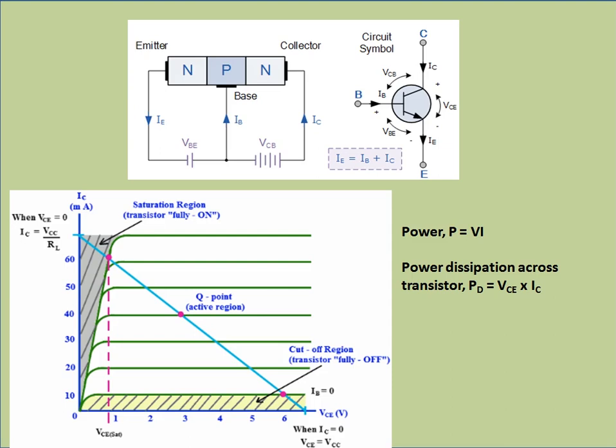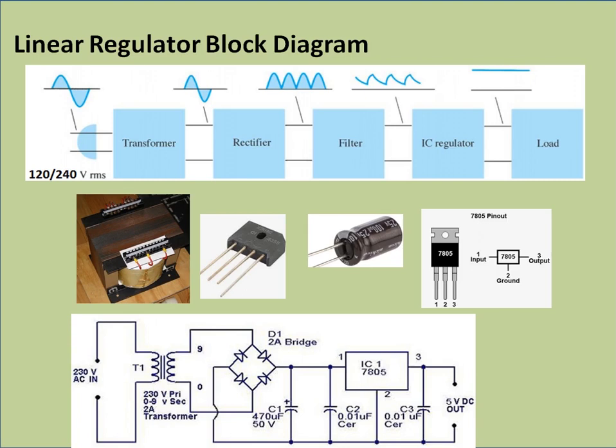If the output voltage of the linear power supply is high, the collector current decreases and the voltage drop across the control element increases. If the output voltage is low, the collector current increases so that the drop across the switching element is reduced. The excess energy is dissipated across the switching element, calculated as P = V_CE × I_C. This dissipation generates a lot of heat, which is one of the disadvantages of the linear power supply, decreasing efficiency. A heat sink is required to dissipate this heat, which increases the size and weight.